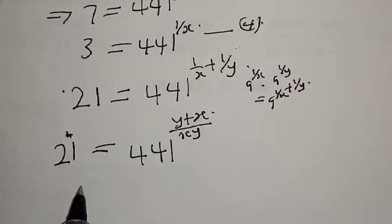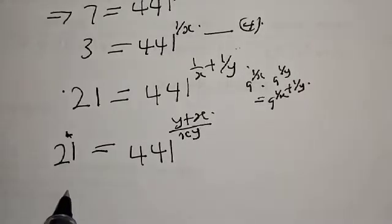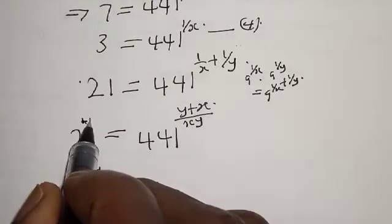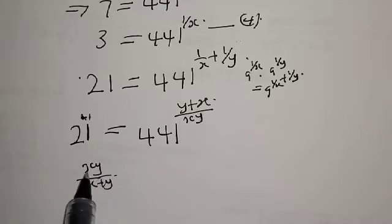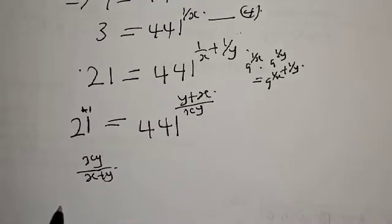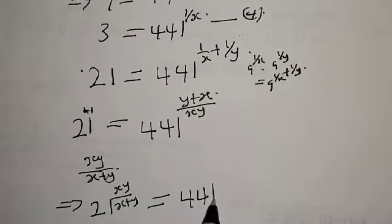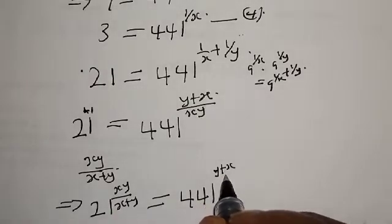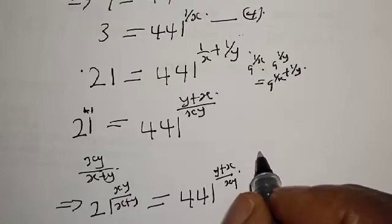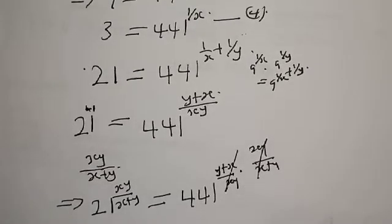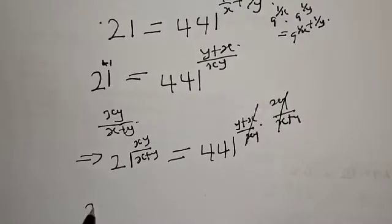We multiply both sides of the exponent by x·y over x plus y. That gives us 21 raised to power x·y over x plus y is equal to 441 raised to power (y plus x over x·y) times (x·y over x plus y). This cancels, and we are left with 21 raised to power x·y over x plus y is equal to 441.